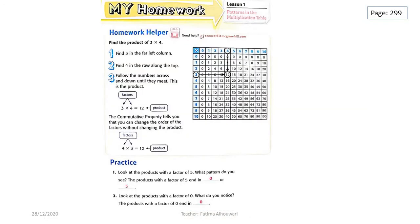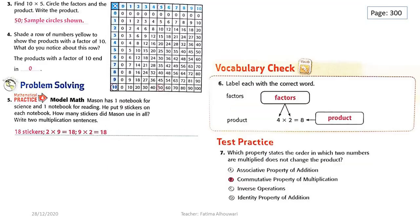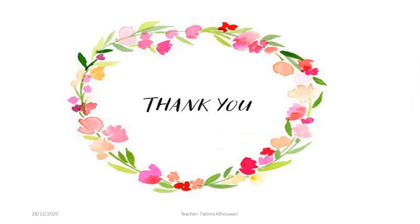The same for the next page. This is your homework, grade 3— page number 299. You can check your answers here. The same for page number 300 — you can check your answers here. Please, grade 3, I know you are so clever. You can solve all these questions by yourself, but it's very important to check your answers. That's enough for today, grade 3. Thanks for watching. Goodbye!